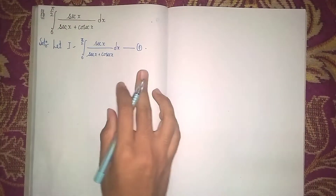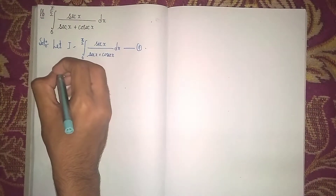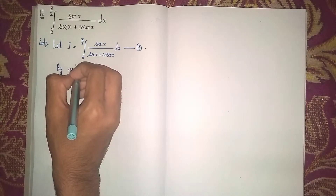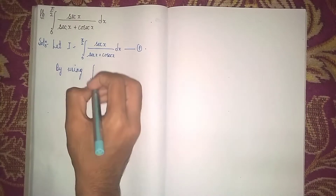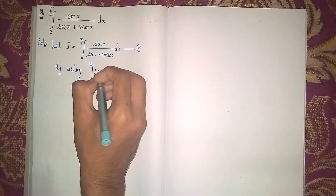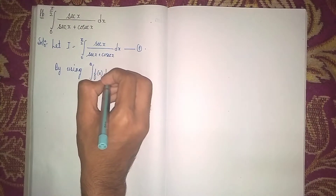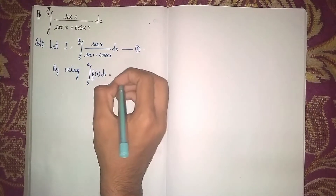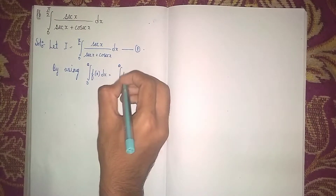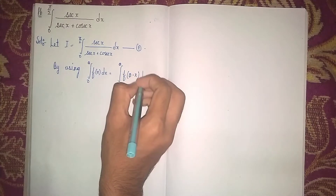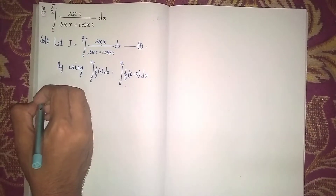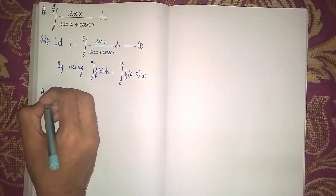Now we are using an integration property. The property we are using is: integral from 0 to a of f(x) dx equals integral from 0 to a of f(a minus x) dx. We will apply this property to our function.